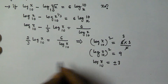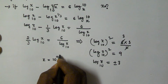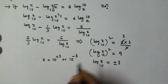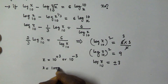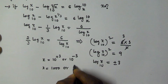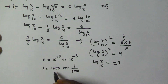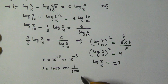So the value of x is going to be 10 to the power of plus 3 or 10 to the power of minus 3. Therefore x is equal to 1000 or 1 by 1000. I hope you got this one. Thank you very much for watching this video and please subscribe to my channel.